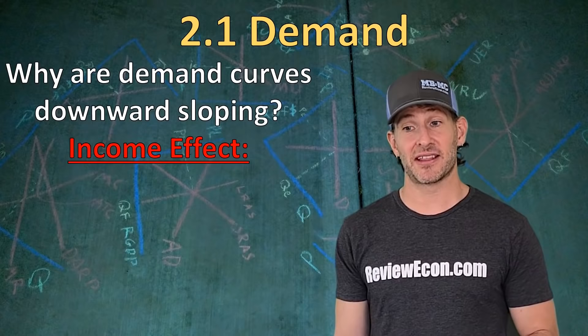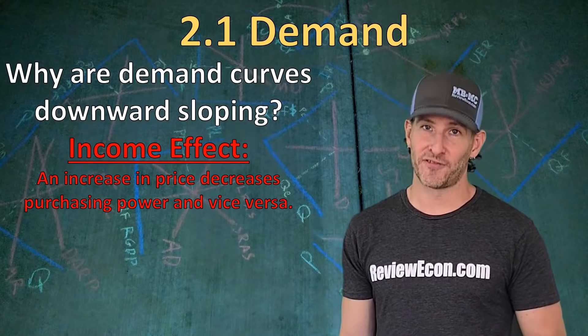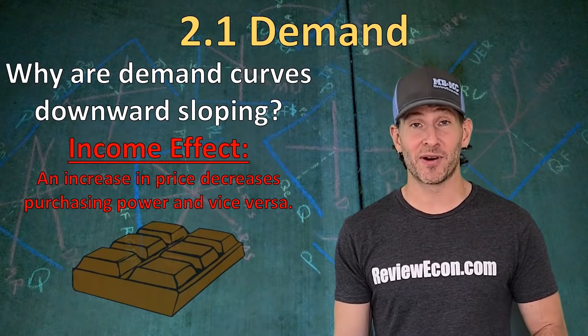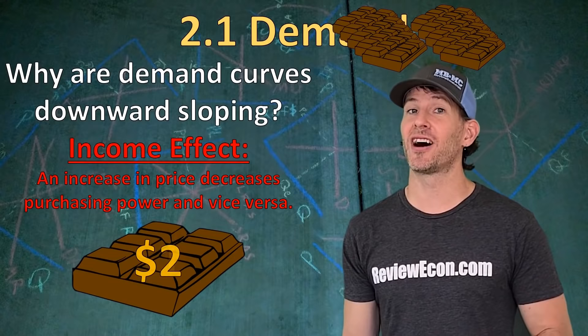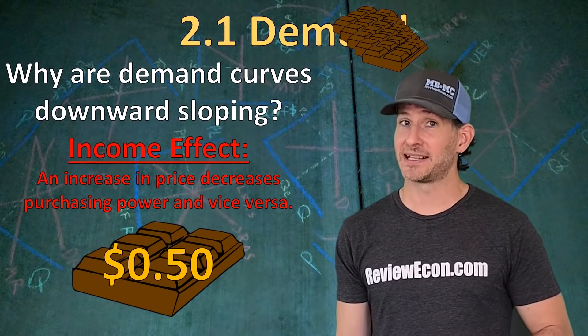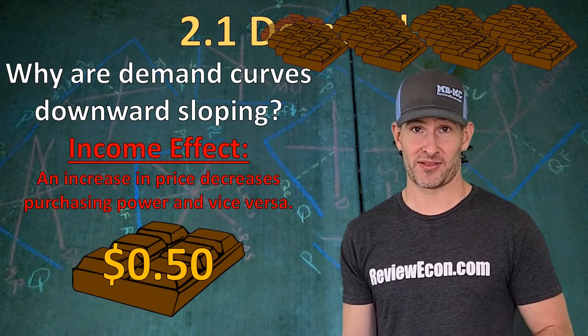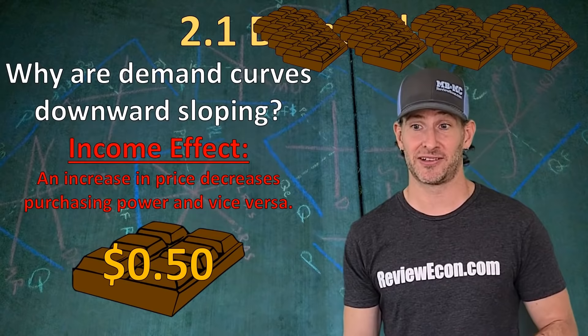The next reason is called the income effect. The income effect tells us there is an increase or decrease in purchasing power as a result of a change in price. When the price goes up, you can't afford as much; when it goes down, you can afford more. If the price of candy bars is $1 and you have $10, that's worth 10 candy bars. If the price doubles to $2, your purchasing power drops to 5 candy bars. If the price falls to $0.50, your $10 is worth 20 candy bars.